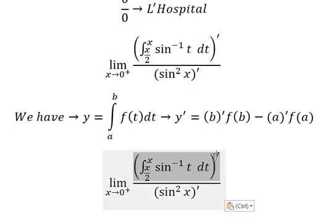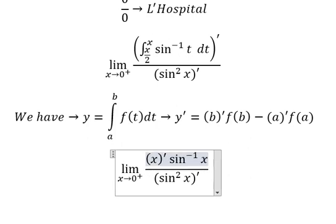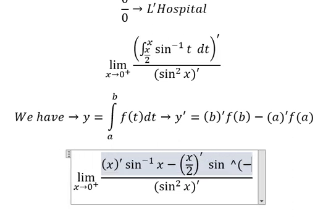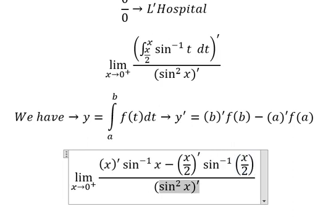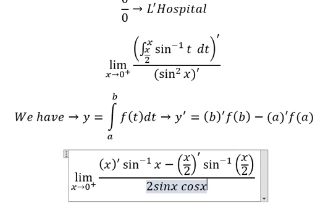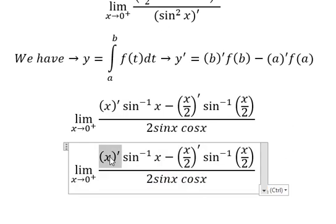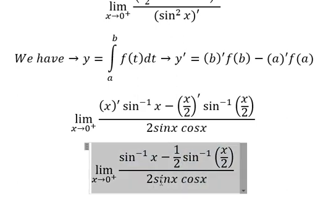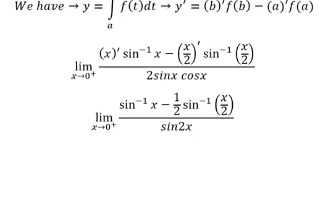So for this one we have it like this. This one we have two x cosine x. This one we have one, this one we have one over two, this one we have one, this one we have one over two. This one we have one, this one we have one, this one we have one.